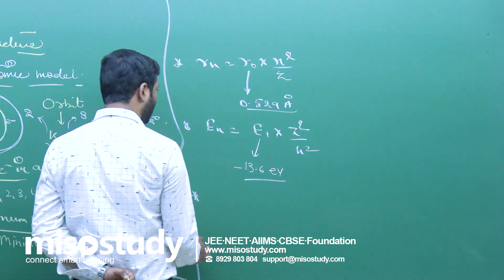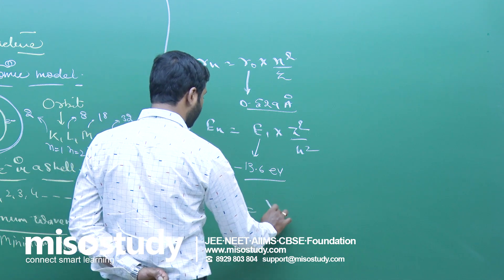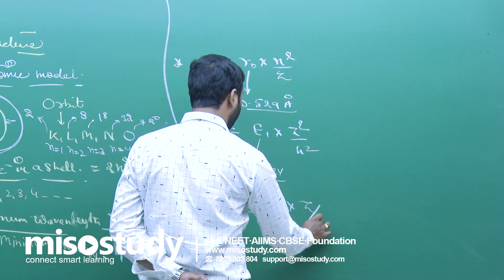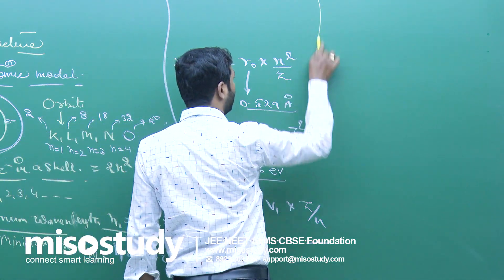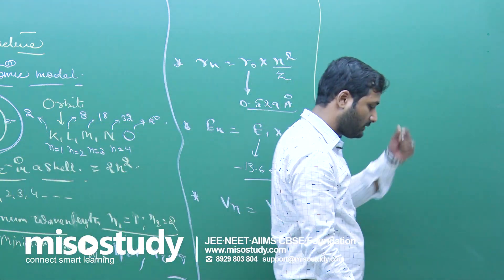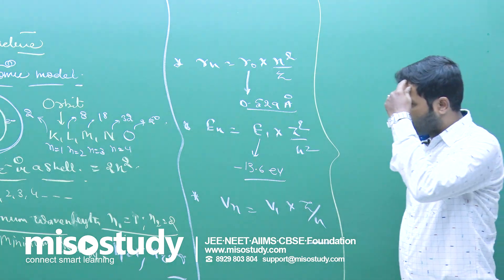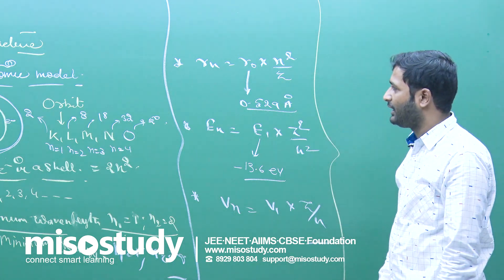We have velocity. Velocity is equal to v₁ multiplied z upon n. Similarly, you can derive the maximum number of derivations, like circumference, time, like wave number also. This generally we study in atomic structure.